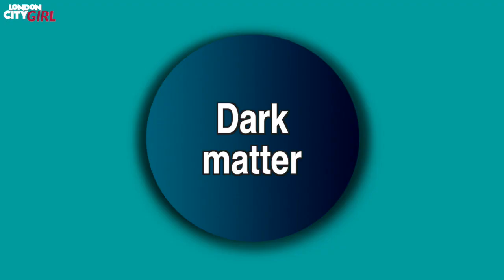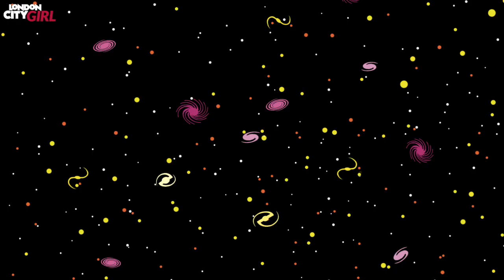Dark matter is a form of matter that does not interact with light and so it is invisible to us. We know it's there because calculations have shown that without its gravitational pull, galaxies and other large structures in the universe would not have been able to form.